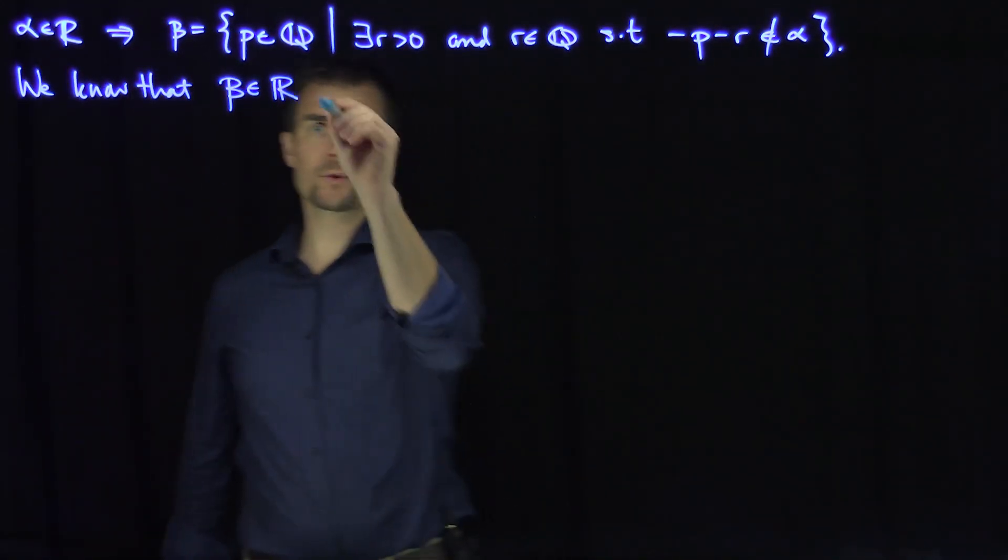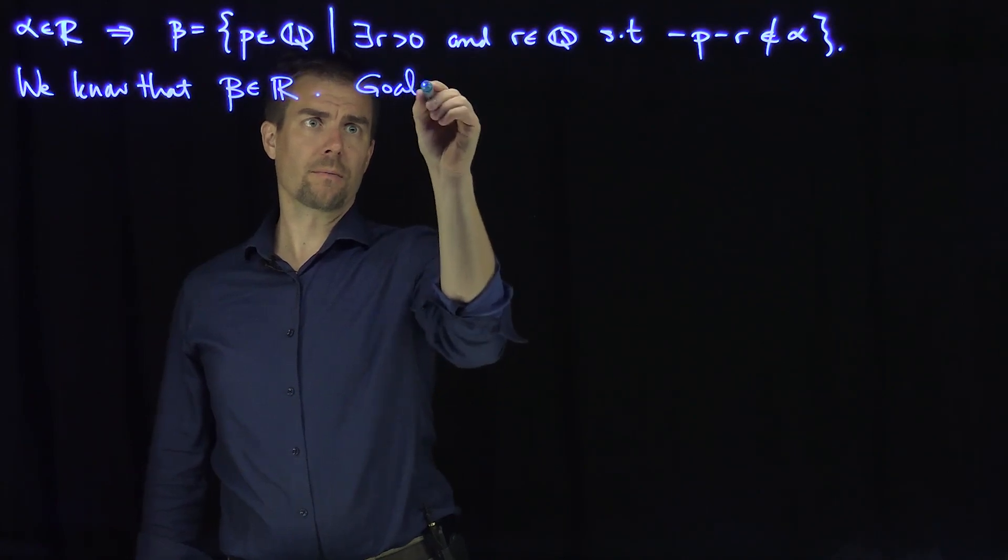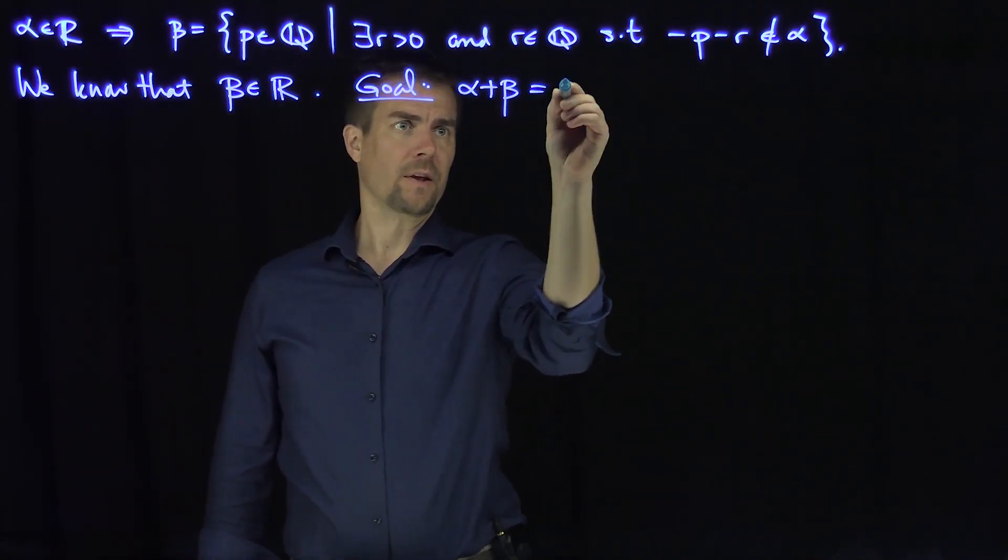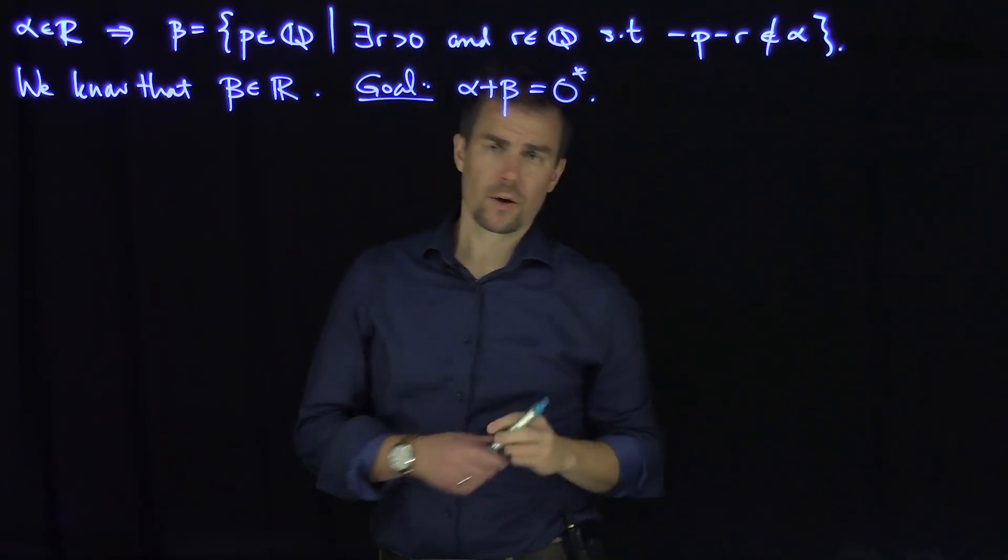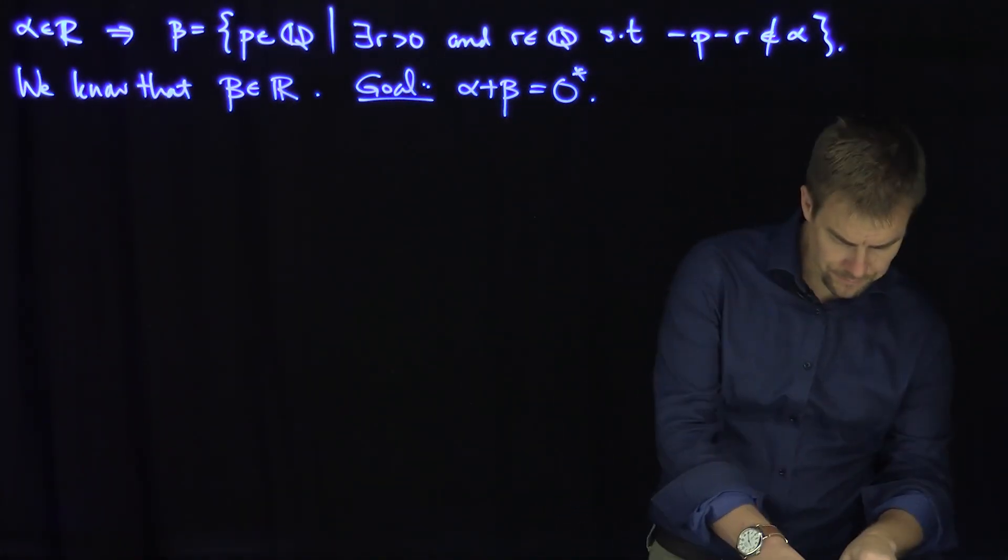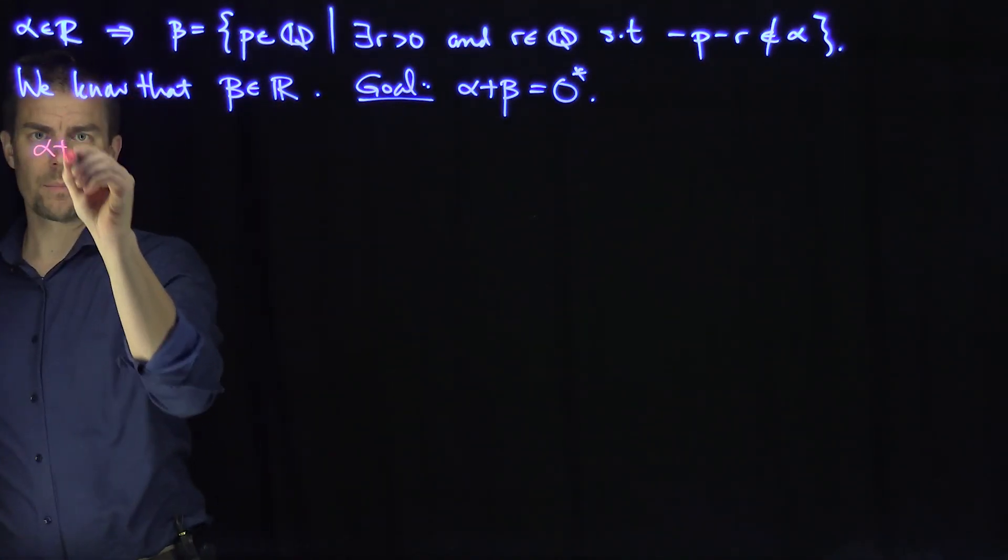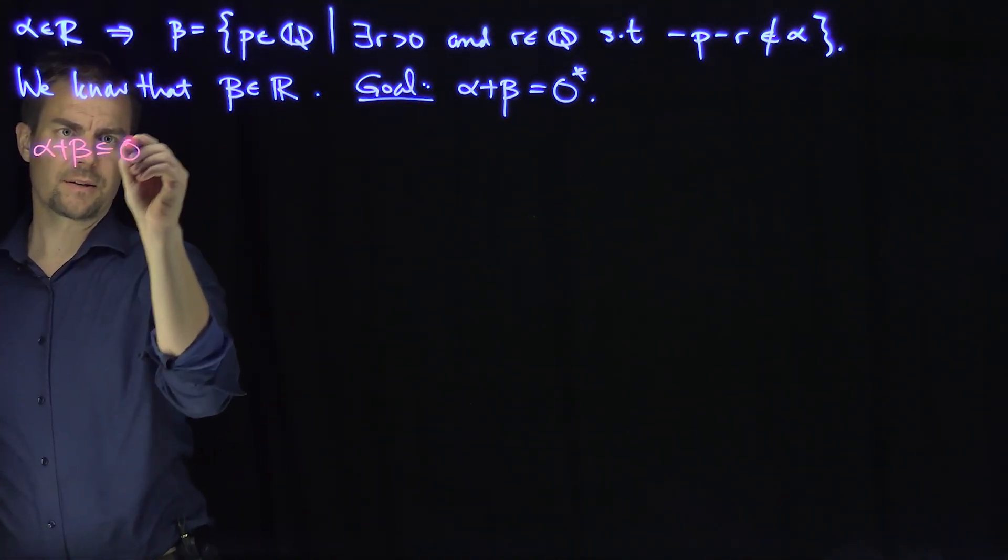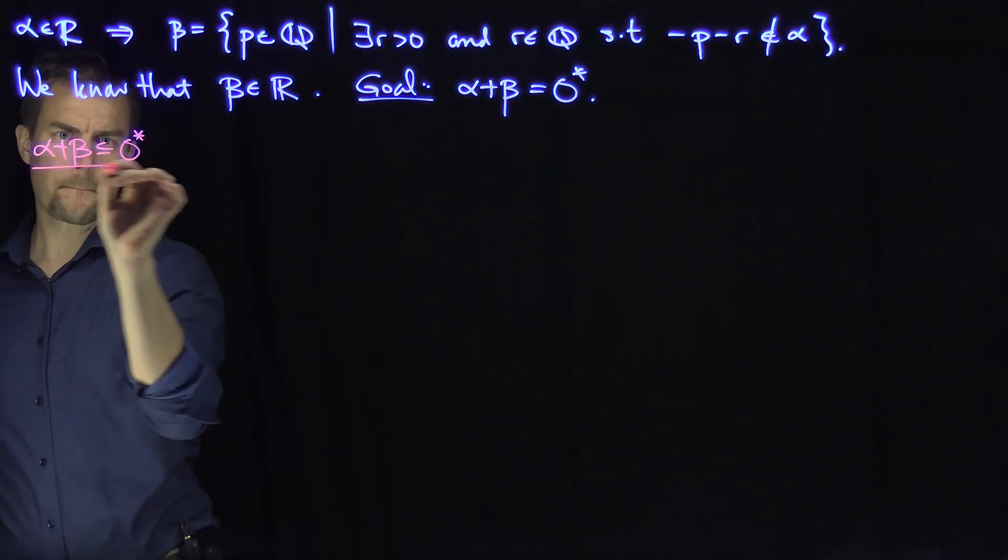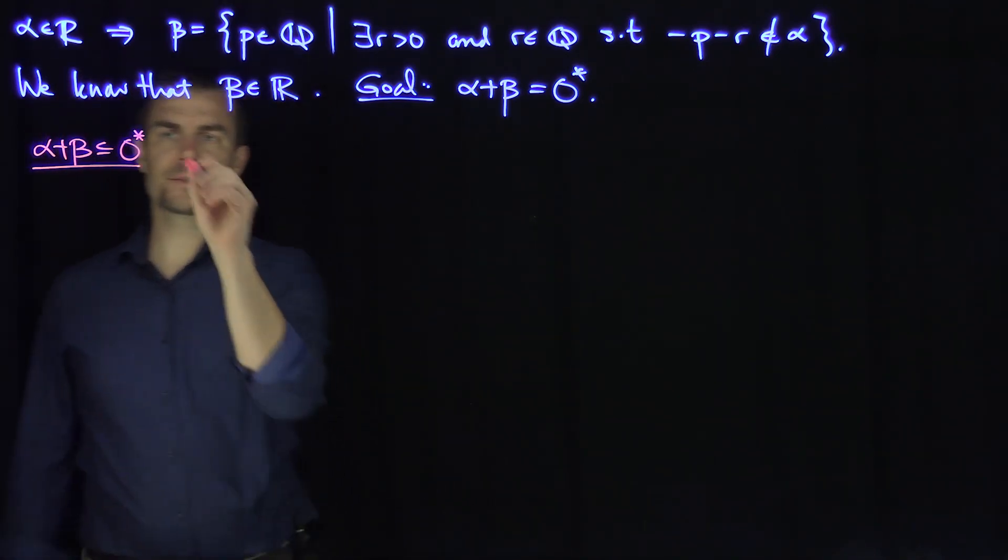Now we want to show, so our goal in this video is to show that alpha plus beta is the zero cut. So one inclusion is fairly straightforward. Let's do the first inclusion. I'd like to show that alpha plus beta is contained in zero star.